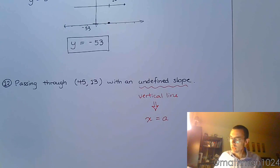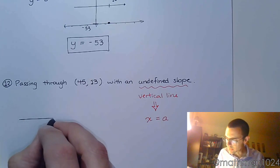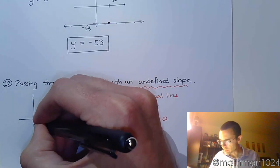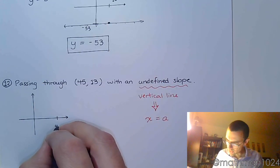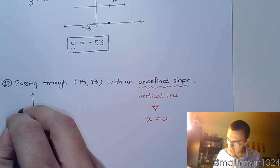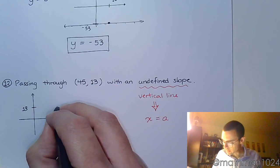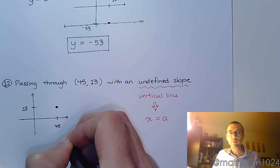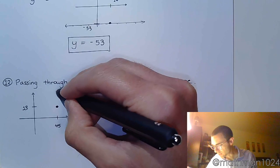So again, if you want to draw a picture to get an idea about what's going on here, you can. So if I call this guy 45 and this is 13, there's your point. To have an undefined slope, you're going to be this vertical line.